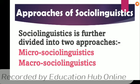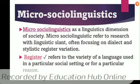The first is micro sociolinguistics and the second one is macro sociolinguistics. We are going to study micro sociolinguistics, which is a dimension of the society. Micro sociolinguistics refers to the research of linguistic styles and variations.